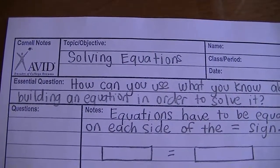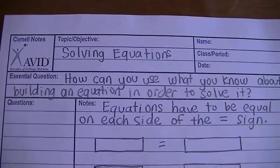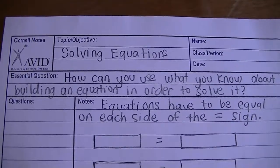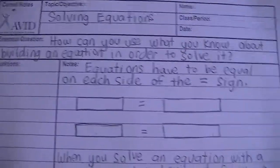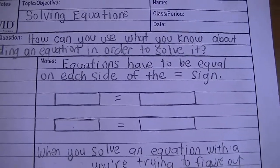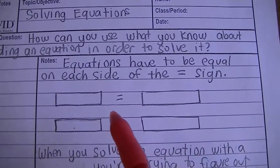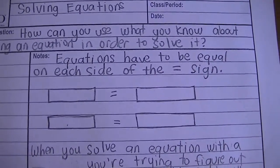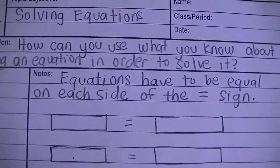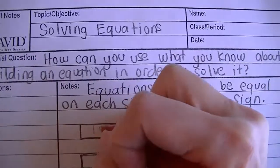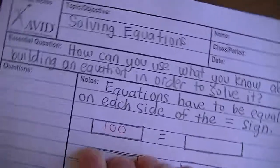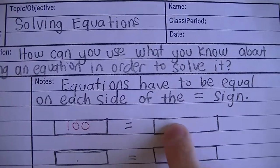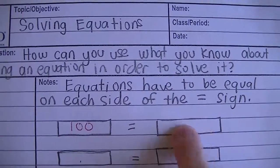The topic is solving equations. The essential question is: how can you use what you know about building an equation in order to solve it? You need to know that equations have to be equal on each side of that equal sign. So if this side equaled 100, then on the other side of the equal sign, whatever happens over here has to equal 100.